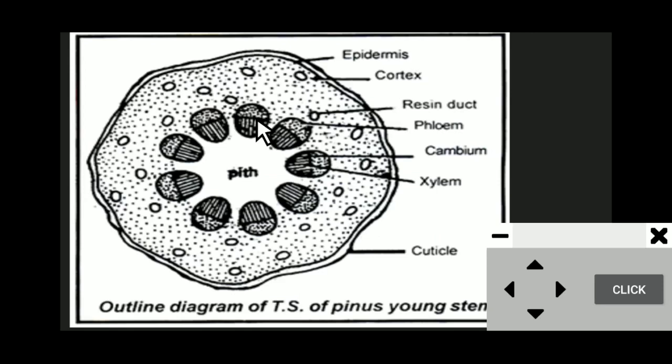Protoxylem consists of spiral and annular tracheids, while metaxylem consists of reticulate thickenings. True xylem vessels are absent. The phloem consists of sieve tubes, phloem parenchyma, and albuminous cells. Companion cells are absent.